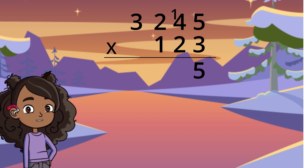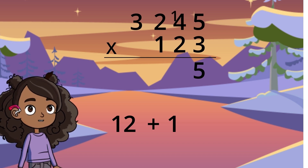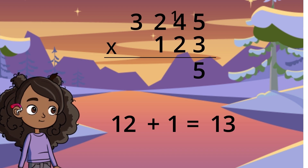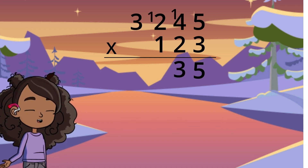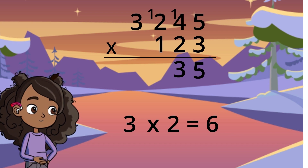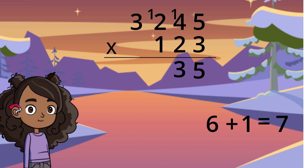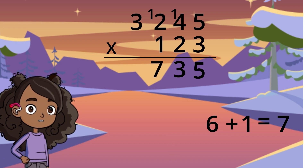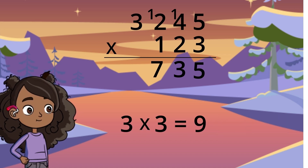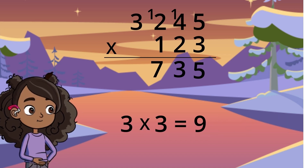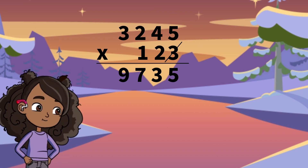3 times 4 equals 12, plus 1 you carried over is 13. Put down the 3, carry the 1. 3 times 2 equals 6, plus the 1 you carried over is 7. 7 is a single digit number, so there is nothing to carry over. 3 times 3 equals 9. We are finished with the 3.